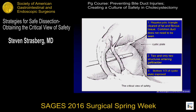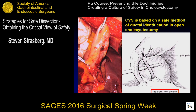There are three attributes to the critical view of safety. The first is a complete clearance of the hepatocystic triangle, but not necessarily seeing the bile duct or the common bile duct. Two and only two structures going into the gallbladder, and the cystic plate visible for about a third of the distance.